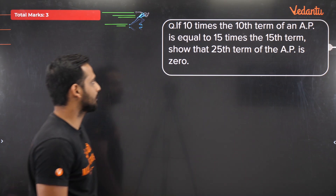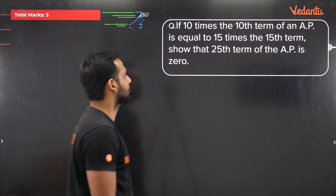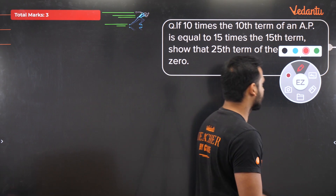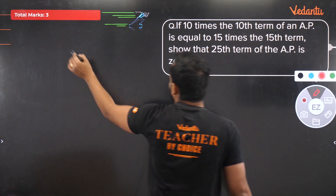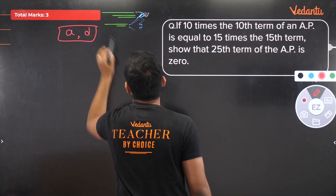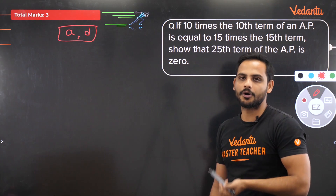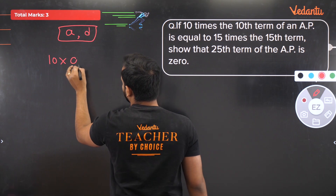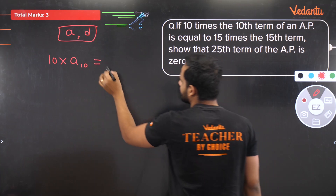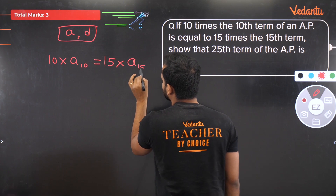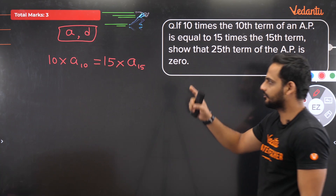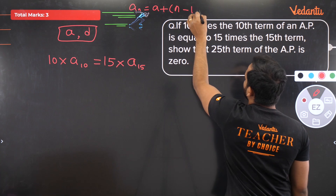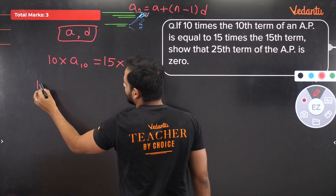Question 5: In an AP, 10 times the 10th term equals 15 times the 15th term. Show that the 25th term is 0. Since first term and common difference are not given, assume they are a and d respectively.